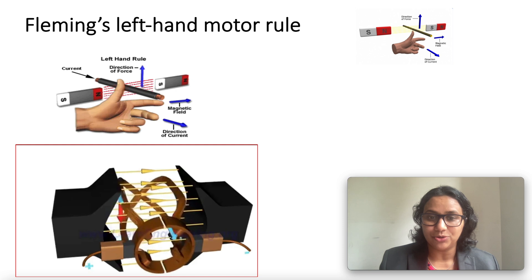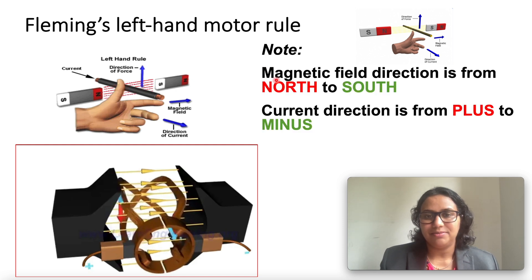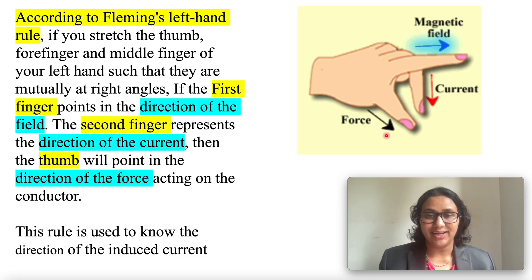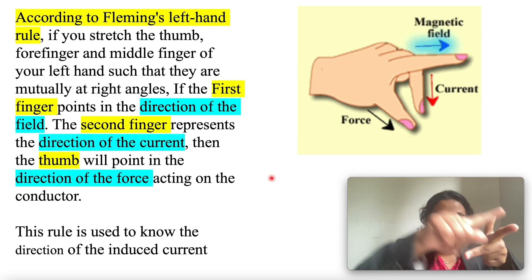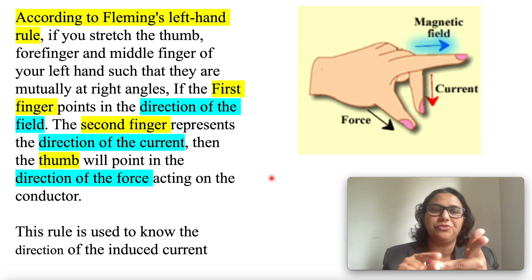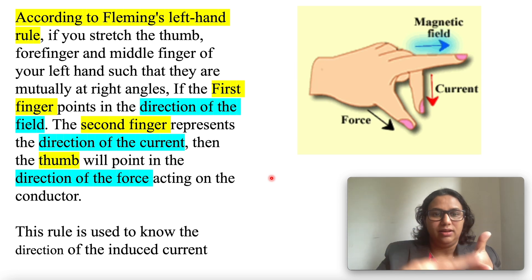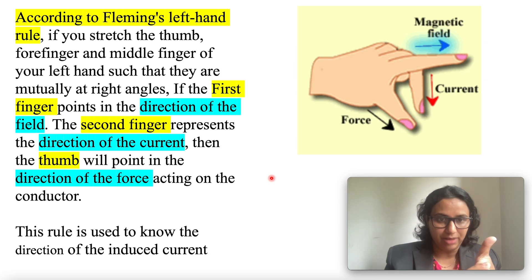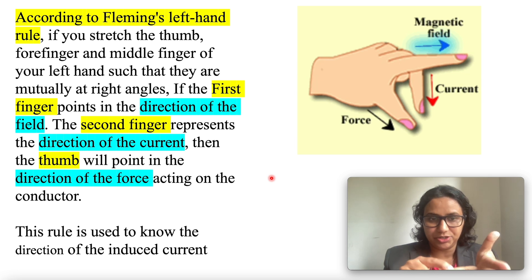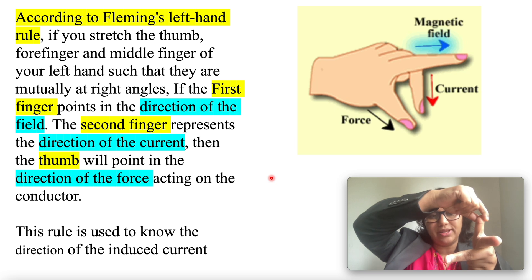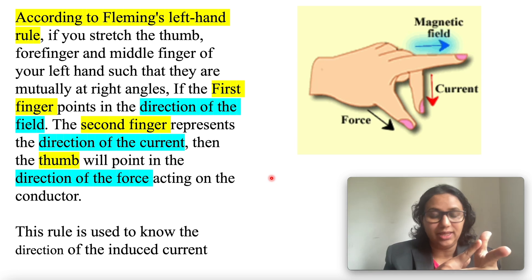The three directions can be illustrated through a simple rule called Fleming's Left Hand Motor Rule. As we know, the magnetic field direction is from north to south pole, but the current direction is taken from plus to minus. If you stretch your thumb, forefinger, and middle finger of your left hand such that they are mutually at right angles — meaning the angle between the fingers must be 90 degrees — then the first finger points the direction of magnetic field, the second finger represents the direction of current, and the thumb points the direction of force acting on the conductor.